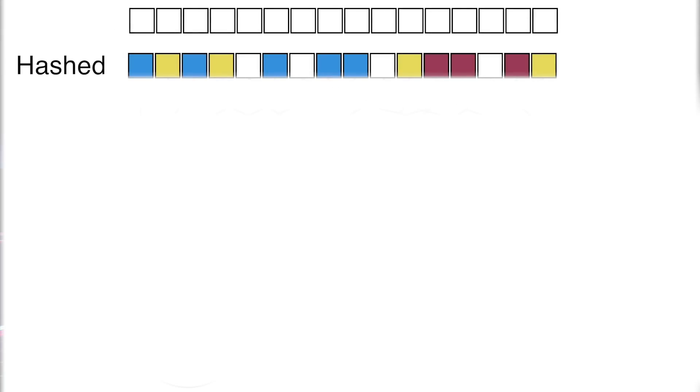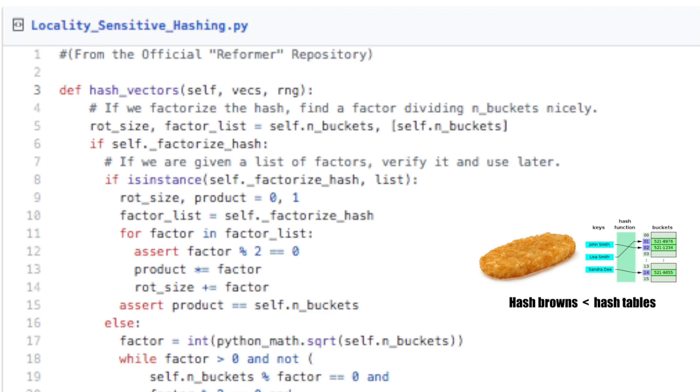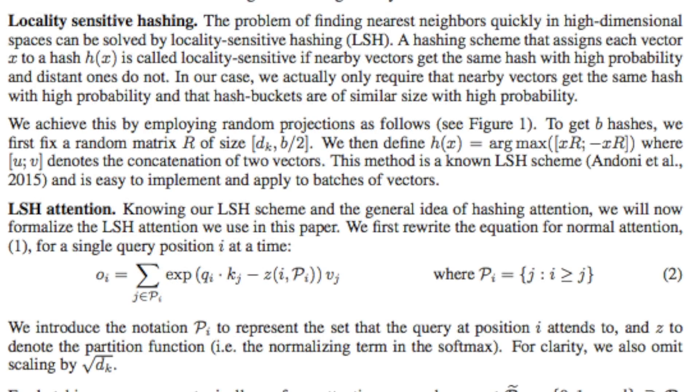So when feeding the network input text, each vector from layer 1 represents a given word, the hash function will then give similar vectors the same hash value. And once these hashes are given, the input sequence is reordered to bring together similar vectors based on their hash, and chunked to enable parallel processing. It's only then that we apply attention to these much smaller chunks, which makes the training process much faster. They call this technique locality sensitive hashing, because sensitivity is so 20-20. More seriously, in their own words, a hashing scheme that assigns each vector x to a hash h of x is called locality sensitive if nearby vectors get the same hash with high probability, and distanced ones do not. Okay, so that was the first solution.